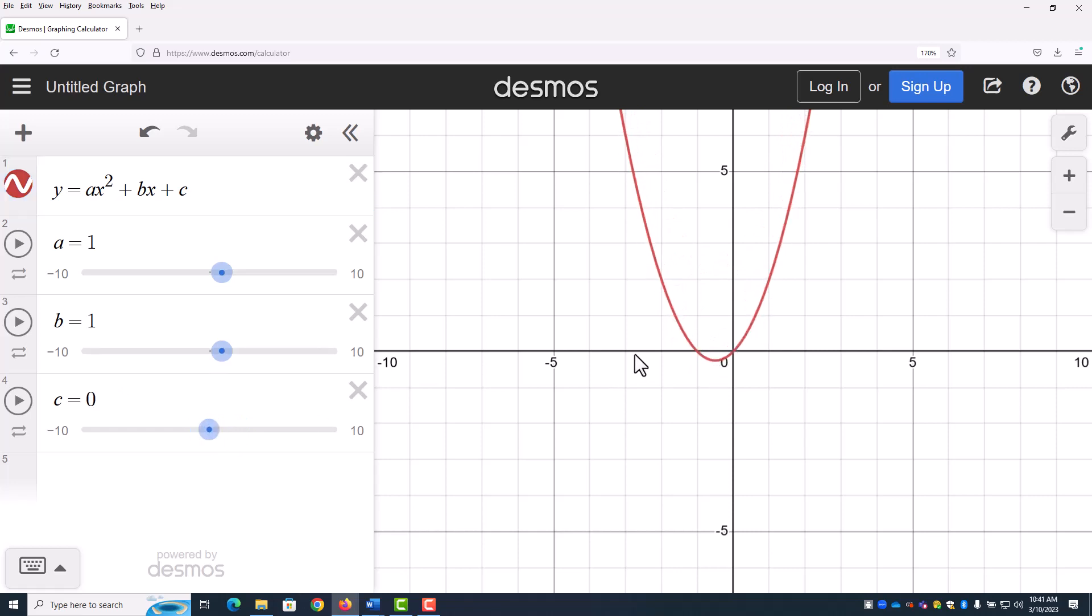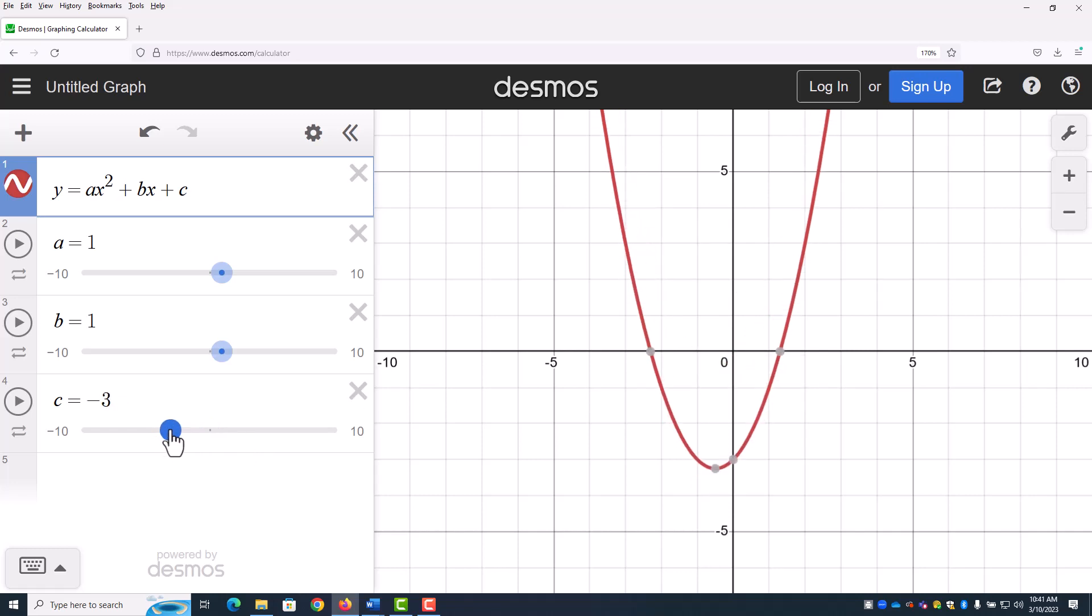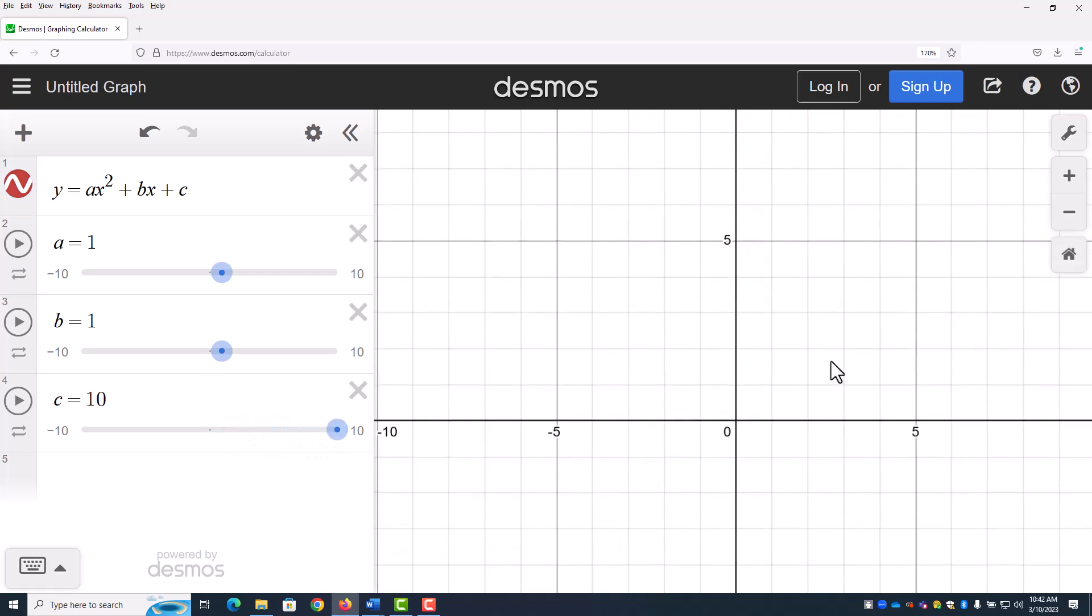And so I can drag it wherever I want. So for example, when C is 0, that means that this parabola is crossing at the origin. When C is negative 3, this parabola is crossing down at negative 3. And then, of course, it goes up and then I can't see it anymore.